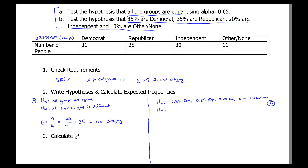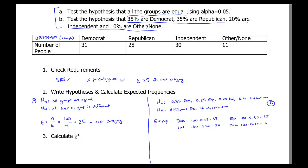For Problem B, expected values are calculated using n times p, so we do each one separately. For Democrats: 100 times 0.35 gives 35. Republicans: 100 times 0.35 gives 35. Independents: 100 times 0.2 gives 20. Other: 100 times 0.1 gives 10. So we now have expected values and hypotheses for both problems.